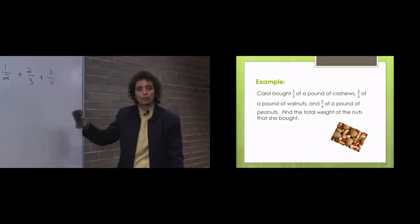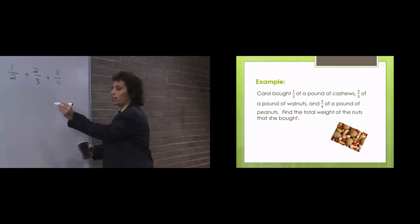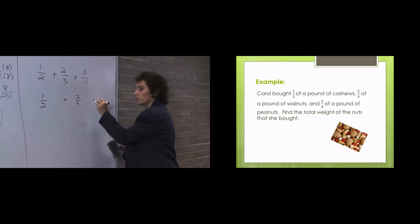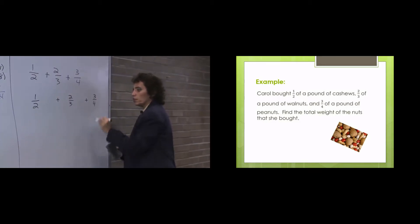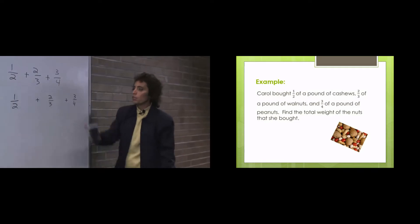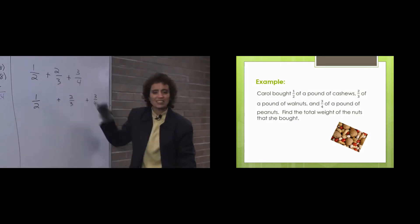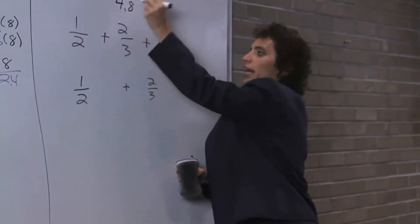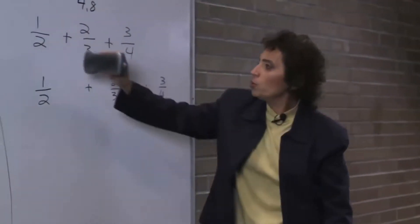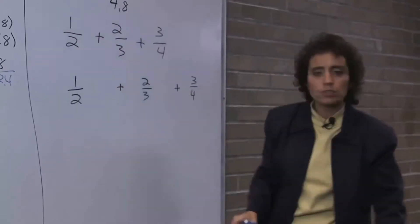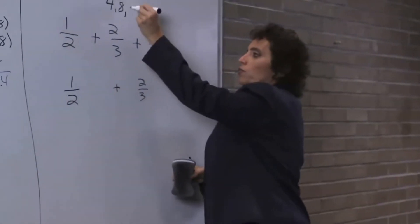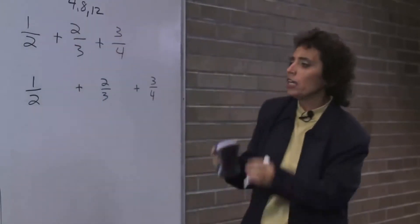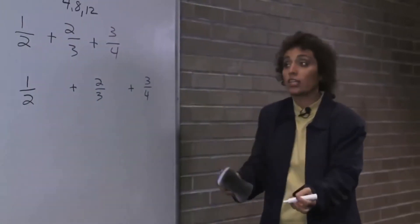Now we need a common denominator for all 3 of them. We start with the biggest number, which is 4. 2 goes into 4, but 3 does not. So 4 is not the LCD. We go to 8 — 2 is okay with 8, but 3 is not. Then we go to 12. Well, 4 goes into 12, 3 goes into 12, 2 goes into 12 — they all go into 12. So the LCD is 12.